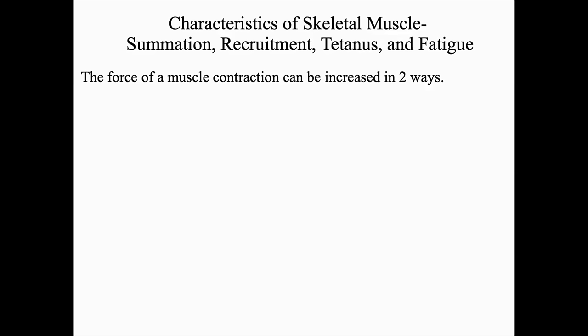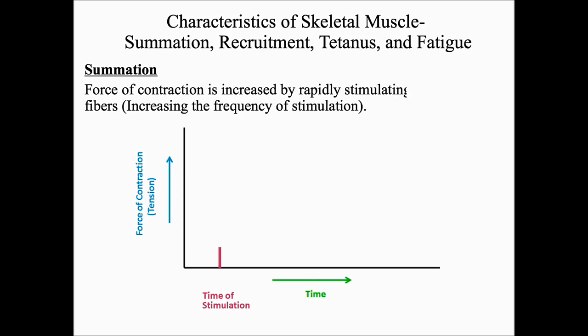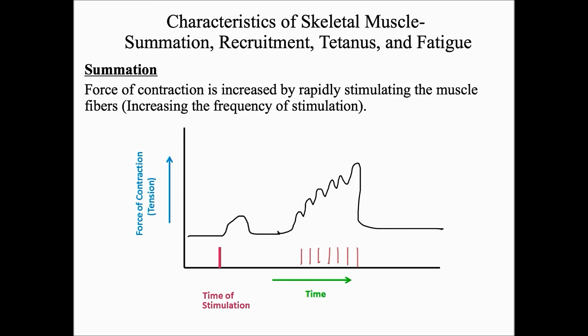How can the force or strength of a muscle contraction be increased? It can increase in two ways: by summation and by recruitment. During summation, the force of a contraction is increased by rapidly stimulating the muscle fibers — in other words, increasing the frequency of stimulation. With multiple stimulations occurring successively, twitches add upon one another and summate because previous twitches are never allowed to fully relax, resulting in an increase in force of contraction.